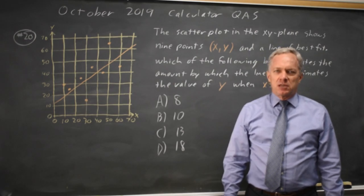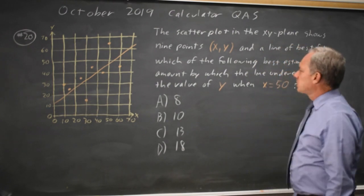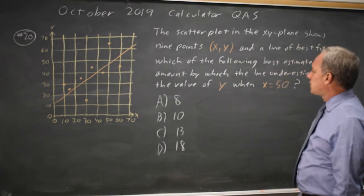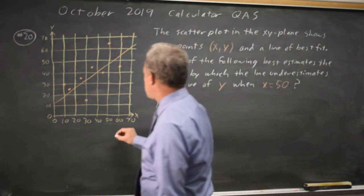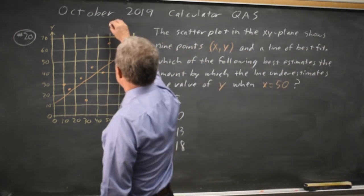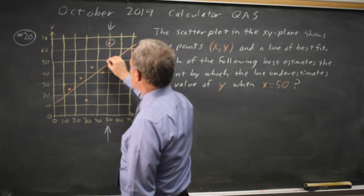This is question 20. The College Board is asking us to interpret a line of best fit, in particular, by how much does the line underestimate the value of y when x equals 50. The x equals 50 is here, so that would be this point, and the line is down here.